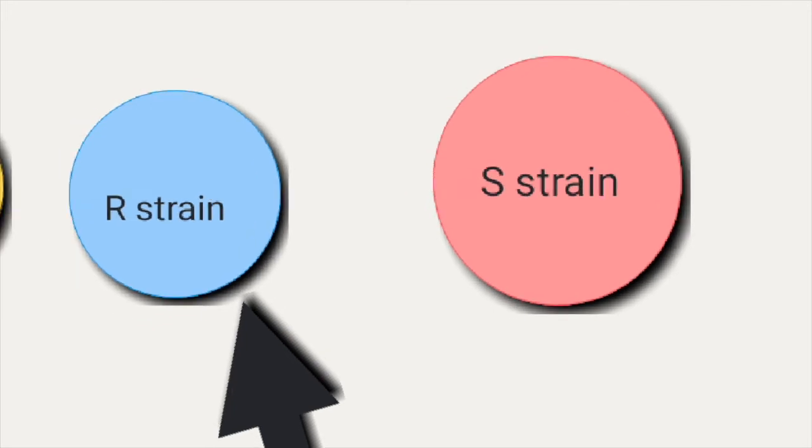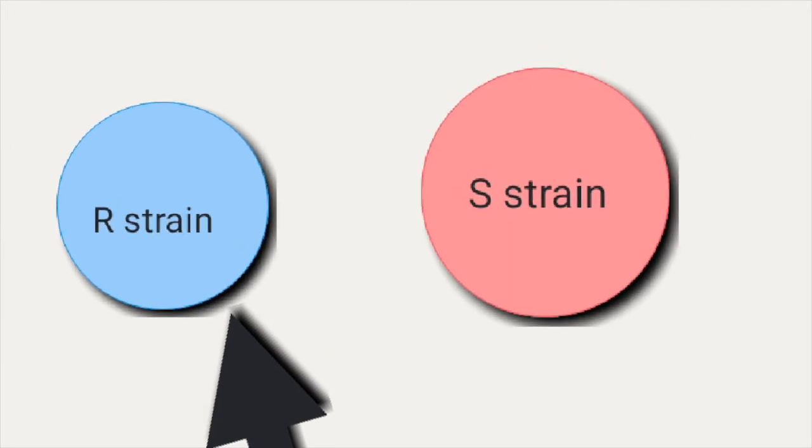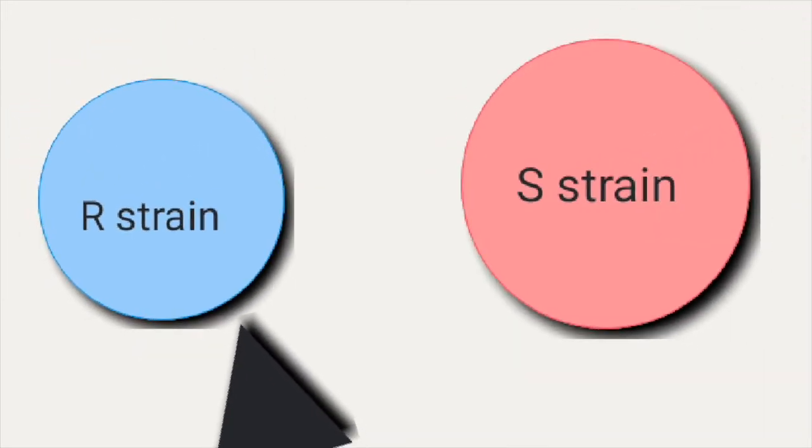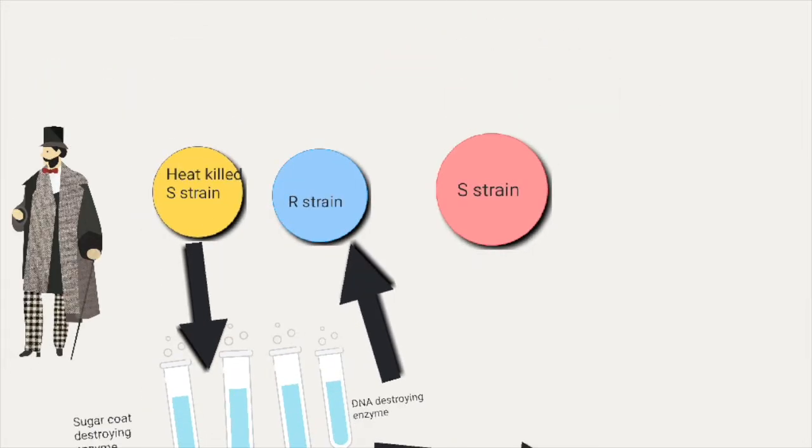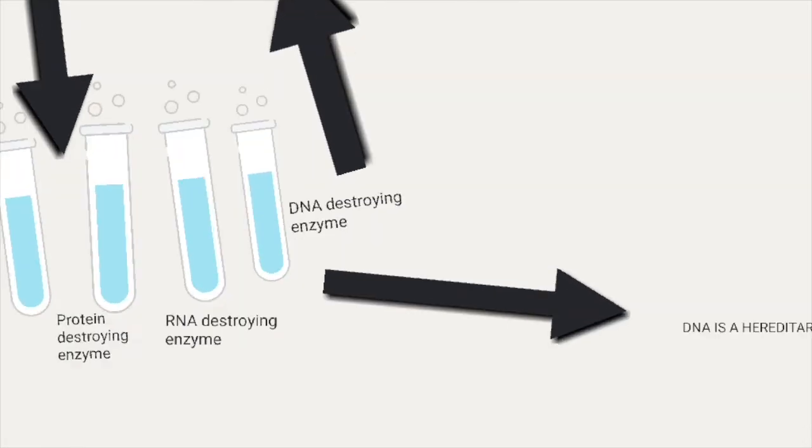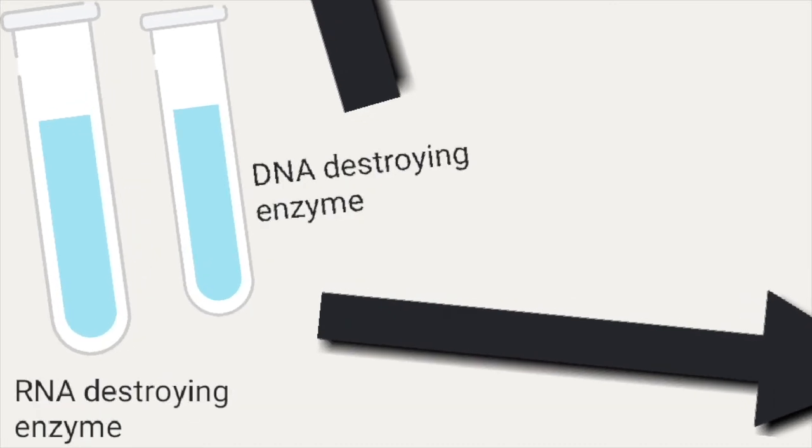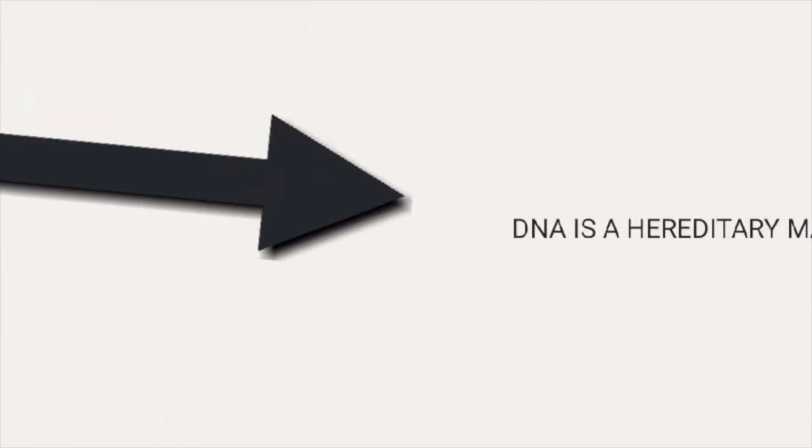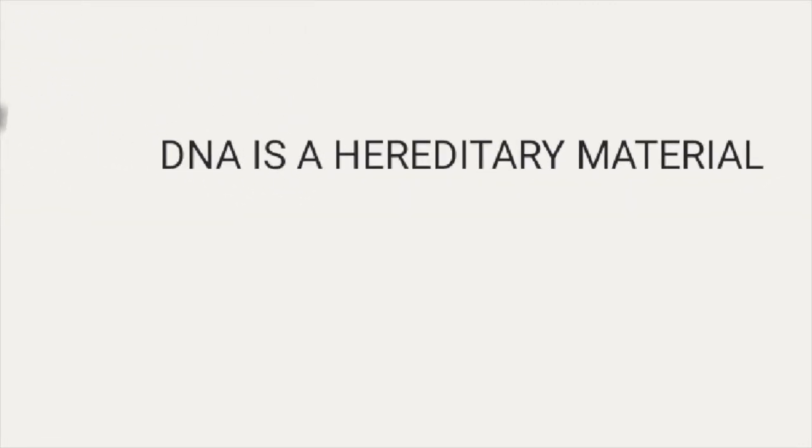They then found out that the only extract that did not convert the non-pathogenic R strain into the pathogenic S strain was the extract that contained the DNA-destroying enzyme. This then verified the hypothesis that DNA is a hereditary material.